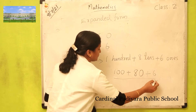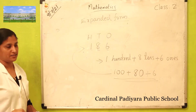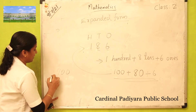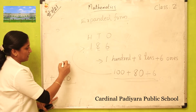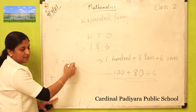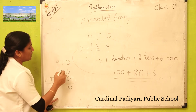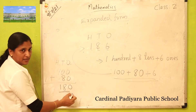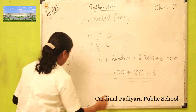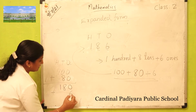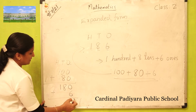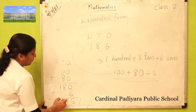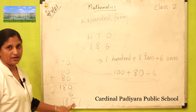That is the expanded form of the number one hundred eighty-six. One hundred plus eighty plus six equals one hundred eighty-six.